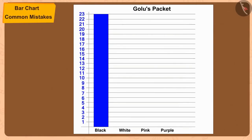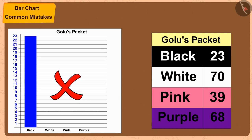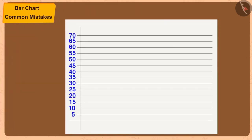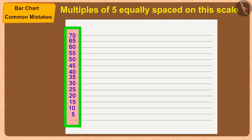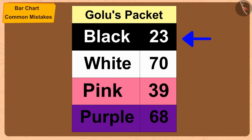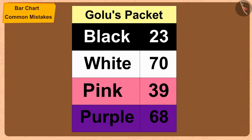Such a small thing. By the way Golu, you have chosen the wrong scale when creating the bar chart. Whenever we want to create a bar chart, we must first find the largest number in that information. Like, the largest in your table is 70. Now, you have written equally spaced numbers from 1 to 23 here, so you will not be able to show 70 on this scale. But if we write multiples of 5 equally spaced on this scale, then you can easily show 70. But Chanda, the number of black balloons here is 23, and 23 is not a multiple of 5. So how can we show 23 on this bar chart?